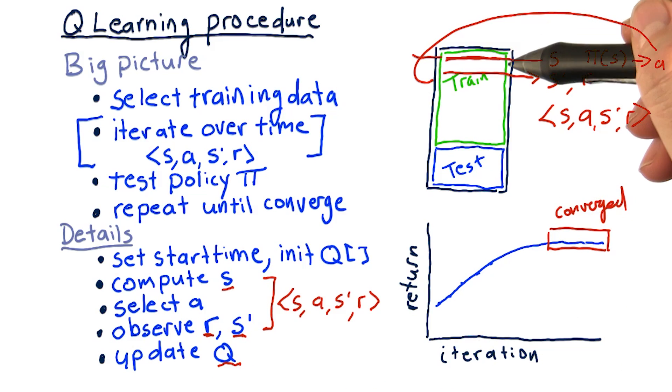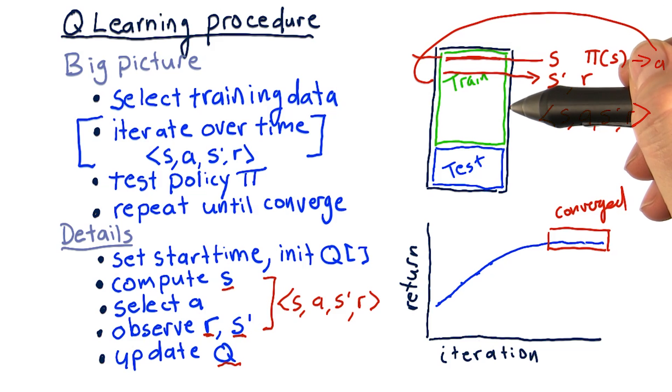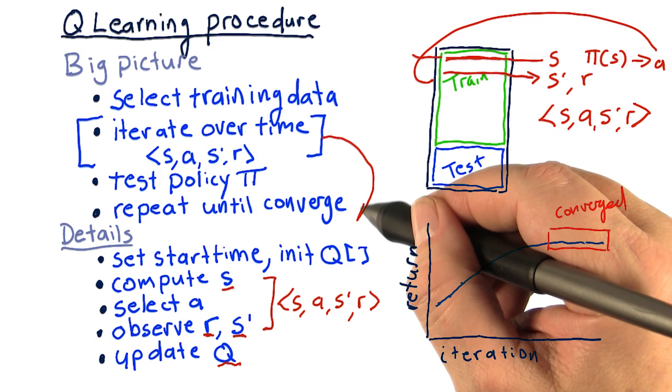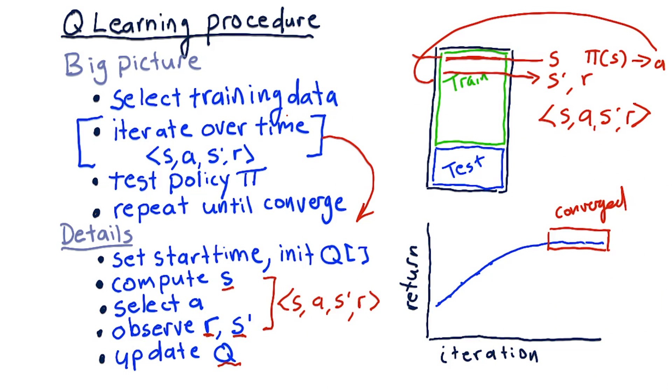Then we step to the next point in time, and the next point in time, and the next point in time, and so on. So these are all the details of what happens in this step of the big picture.